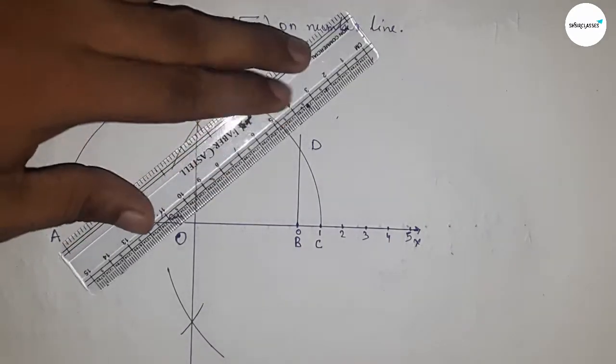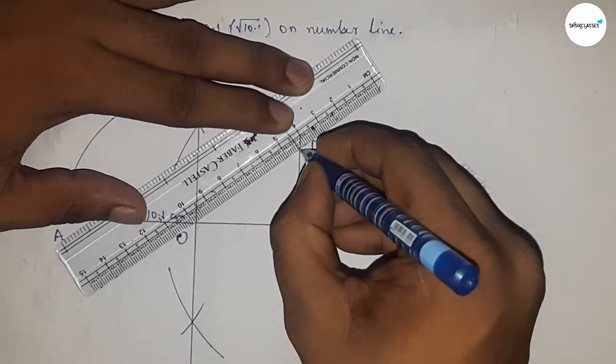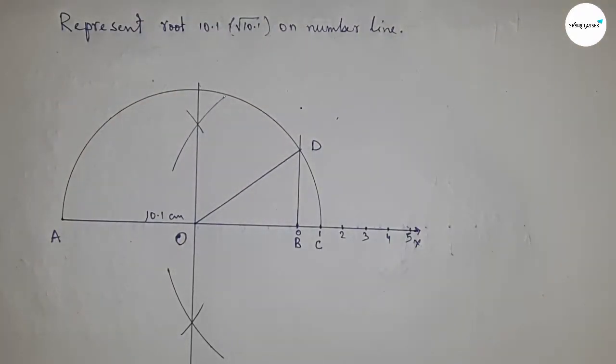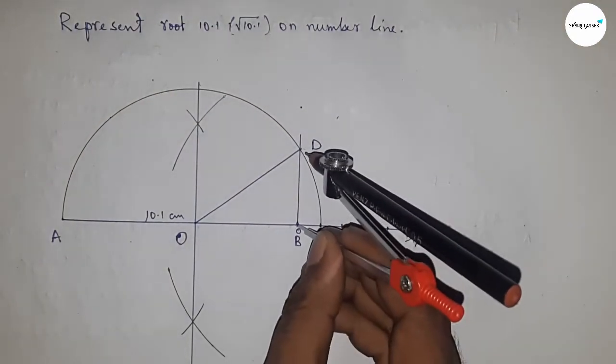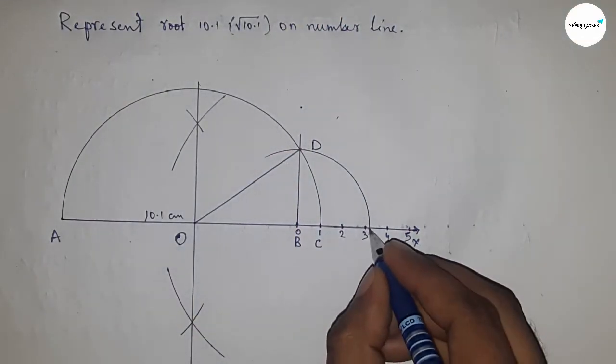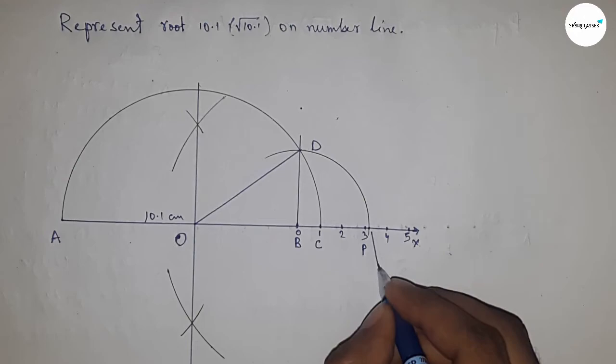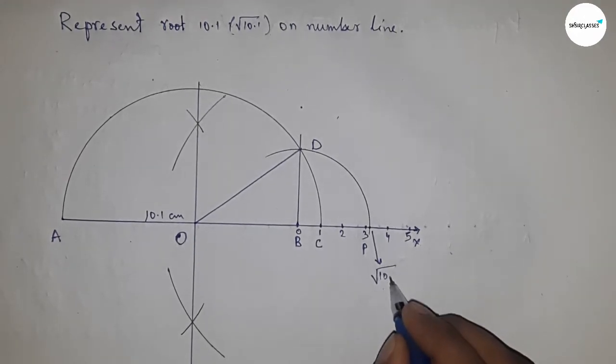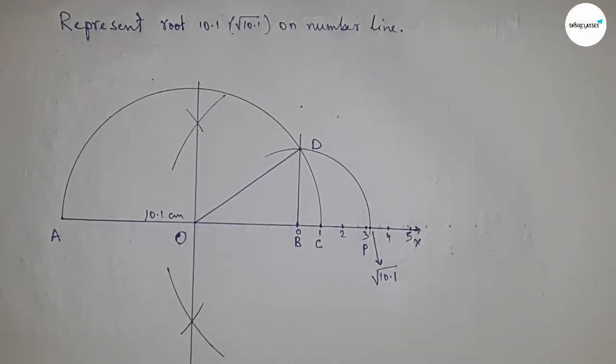Next, joining O and D. Now taking the length BD by compass to draw a arc which meet the number line at a point P, and this is the representation of root 10.1 on number line.